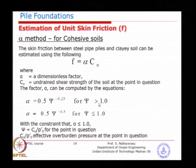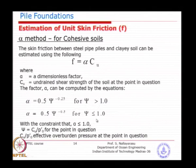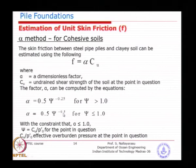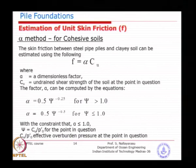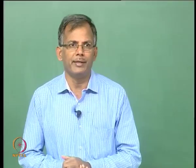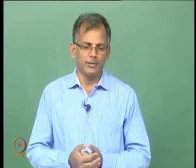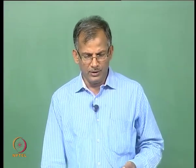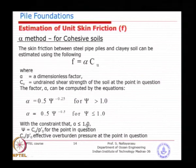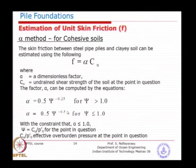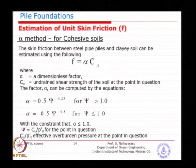There are two criteria: if the psi value is greater than 1, use alpha = 0.5 × psi^(-0.5); if psi is less than 1, use the other limiting formula. Whatever calculation you do, the alpha value cannot be greater than 1 — meaning frictional resistance can only be as much as the undrained shear strength and no more. As soon as you calculate alpha, check if it is less than or greater than 1; if greater, limit it to 1.